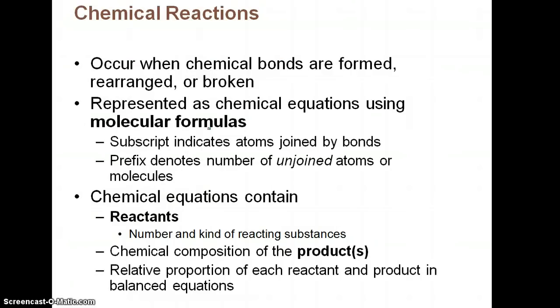So the last thing we're going to talk about are chemical reactions. In chemical reactions, basically, you have chemical bonds breaking, forming, rearranging, which would mean some are breaking and some are forming. So we represent chemical equations using molecular formulas. You should remember that from chemistry. You're always going to have reactants in a chemical formula. That's the stuff you're starting with. And then what you end up with is going to be your products. Everything has to remain in proportion, so your equations have to be balanced. But don't worry, I'm not going to make you balance equations in anatomy.